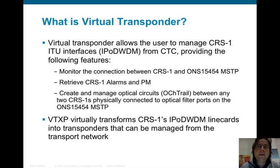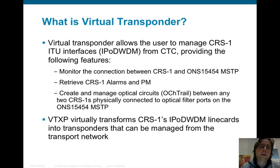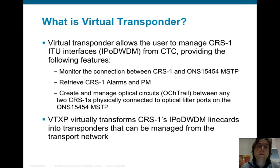If we apply this to Cisco CRS1 and Cisco ONS15454 MSTP, we can control the CRS1 IP over WDM interfaces from CTC — that is, the ONS15454 network craft terminal. With this feature, we can now monitor the connection between the CRS1 and the MSTP DWDM system.